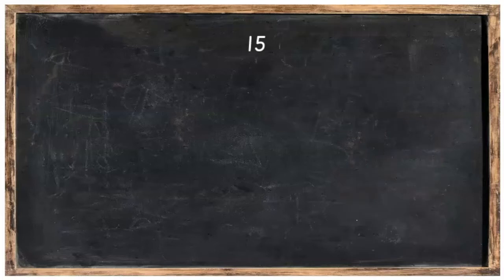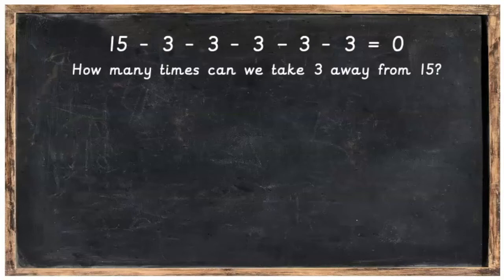So if I take the number 15 and I take away 3 and I take away 3 again and again and again and again until I've got zero, the question is how many times can we take 3 away from 15?